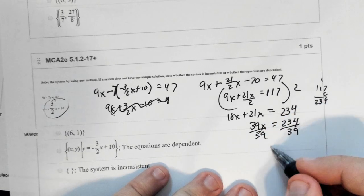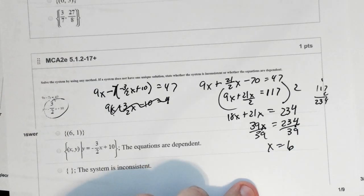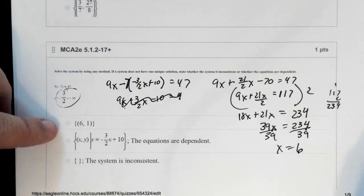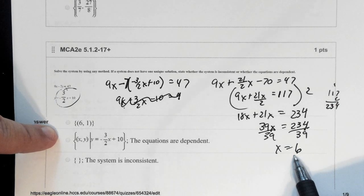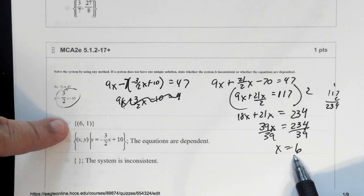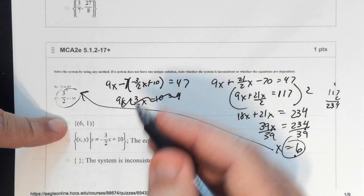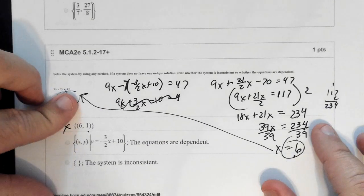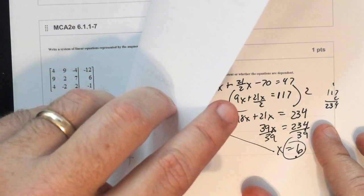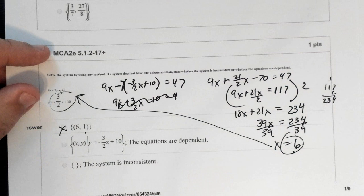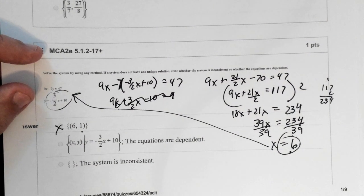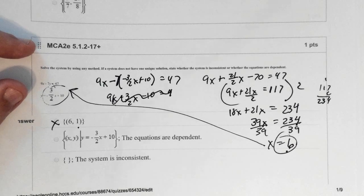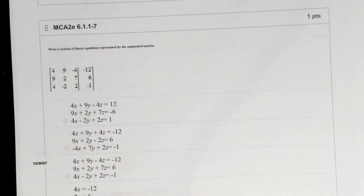Divide by 39, your answer is 6. If it's multiple choice, you know your x value has to be 6. If it's not multiple choice and you need the whole point, plug the 6 back in to get the other value of 1. Any questions so far? Good — that's real Algebra 1 stuff.